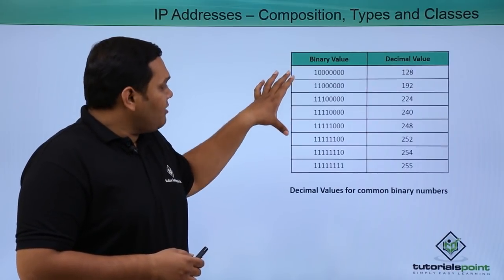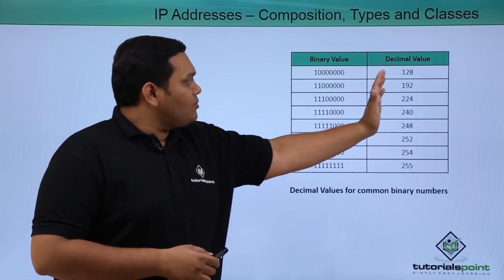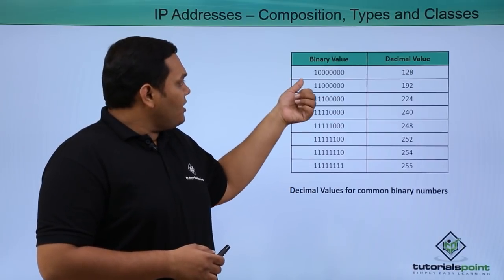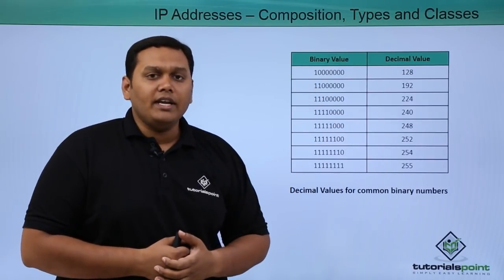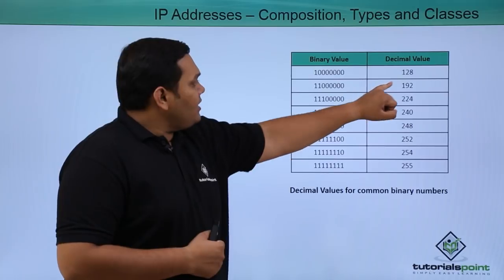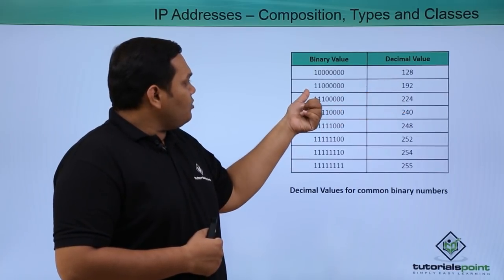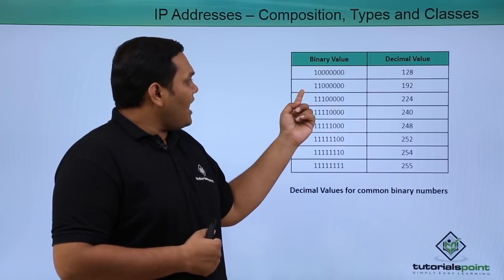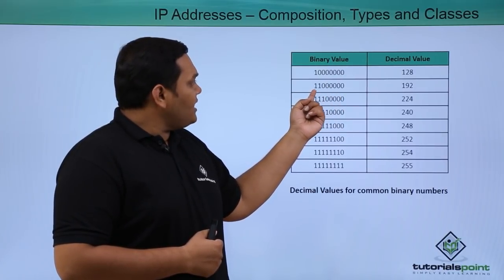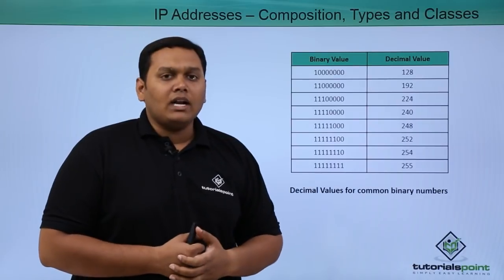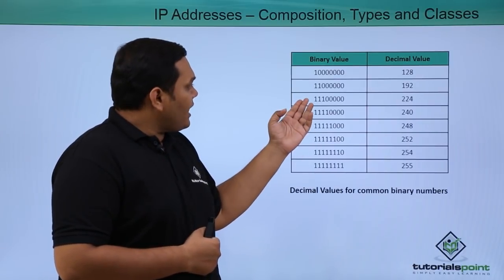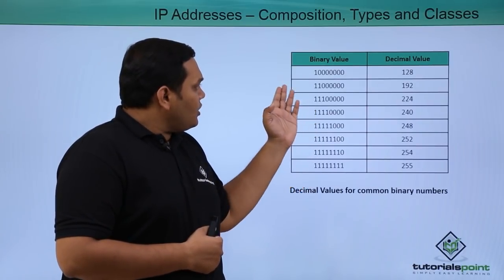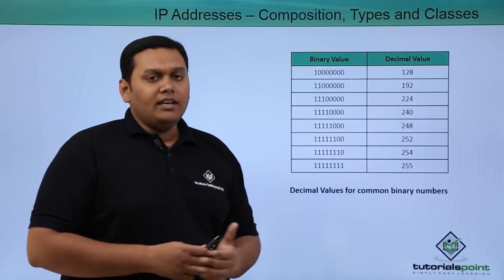You can see how binary values are converted into decimal values. By the previous example, the first one is 128. Coming to the next one, 11000000, if you add up 128 plus 64, then we get 192. The same way when you calculate all these, you can get the decimal value of the binary value.